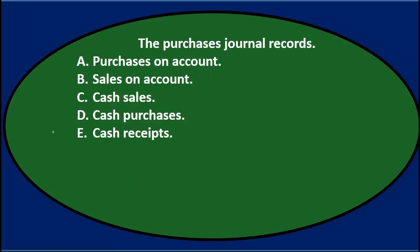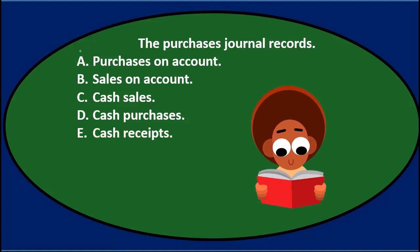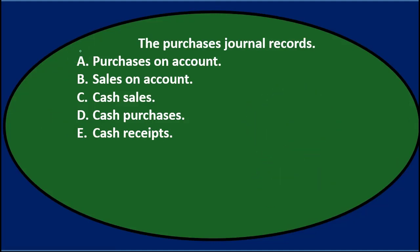Next question: the purchases journal records A, purchases on account; B, sales on account; C, cash sales; D, cash purchases; and E, cash receipts. Let's read it one more time and go through the information, using the process of elimination.